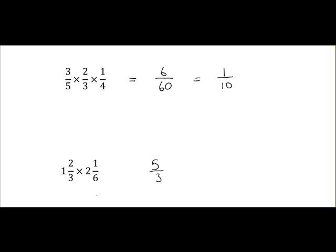2 and 1 sixth. 2 is the same as 12 over 6. 12 over 6 plus 1 over 6 is 13 over 6. So anytime you've mixed fractions just convert them to a single fraction.